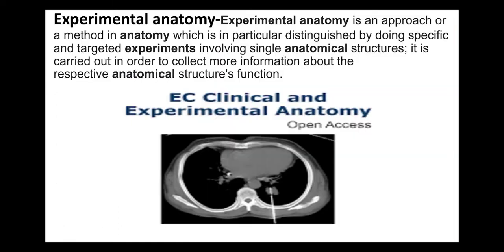Experimental anatomy is an approach or method in anatomy which is particularly distinguished by doing specific and targeted experiments involving a single anatomical structure. It is carried out in order to collect more information about that anatomical structure's function. In experimental anatomy, we use morphological and chemical approaches and also take help from different techniques like X-ray, ultrasound, ECG, etc.